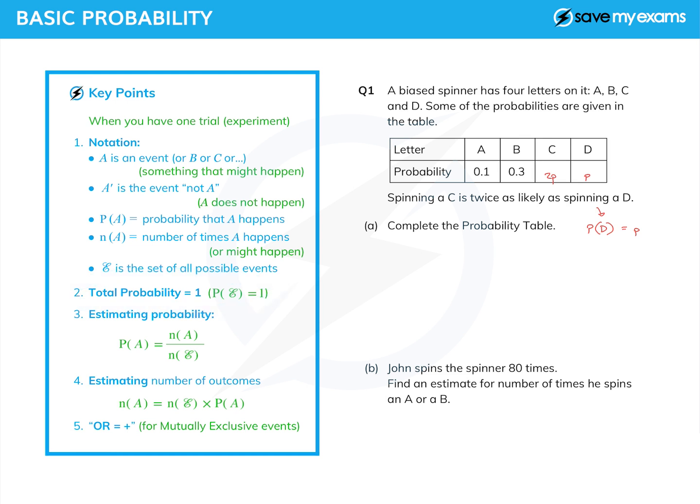And we're going to use the fact that the total probability in any situation is one. So we can say that the probability of anything happening equals one. And so we simply add up the four probabilities we've got now, and they must equal one.